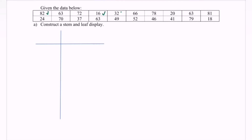For example, if the score consists of two digits, let the stem be the first digit and the leaf be the second digit. So here we have the values 82, 63, 72, and 16. The first part we name as stem, and the second part as leaf. Since we have two digits, we let the first digit on the left-hand side become the stem.